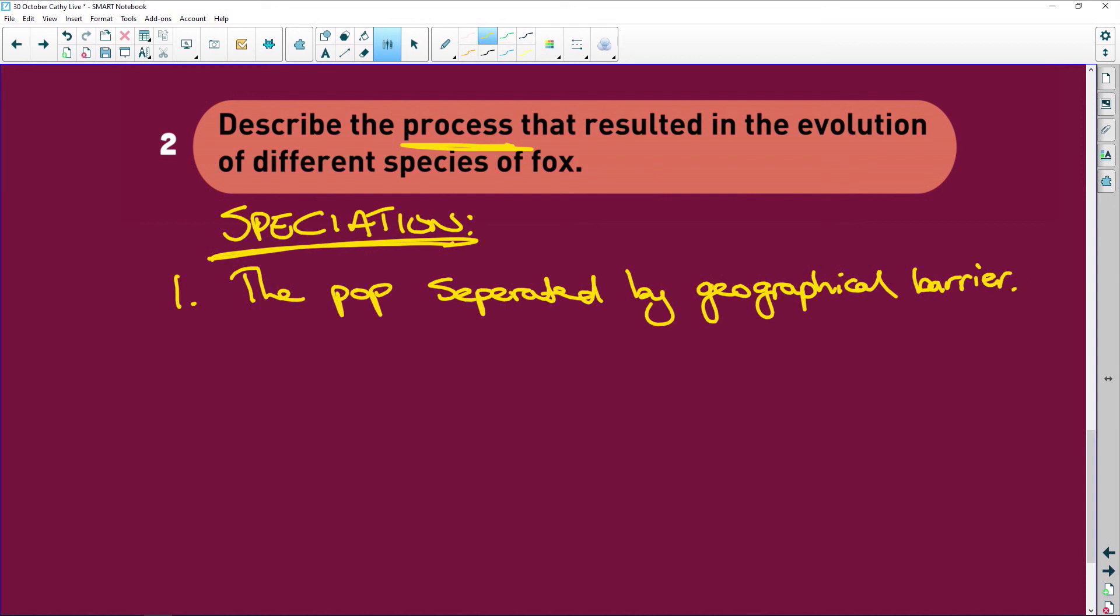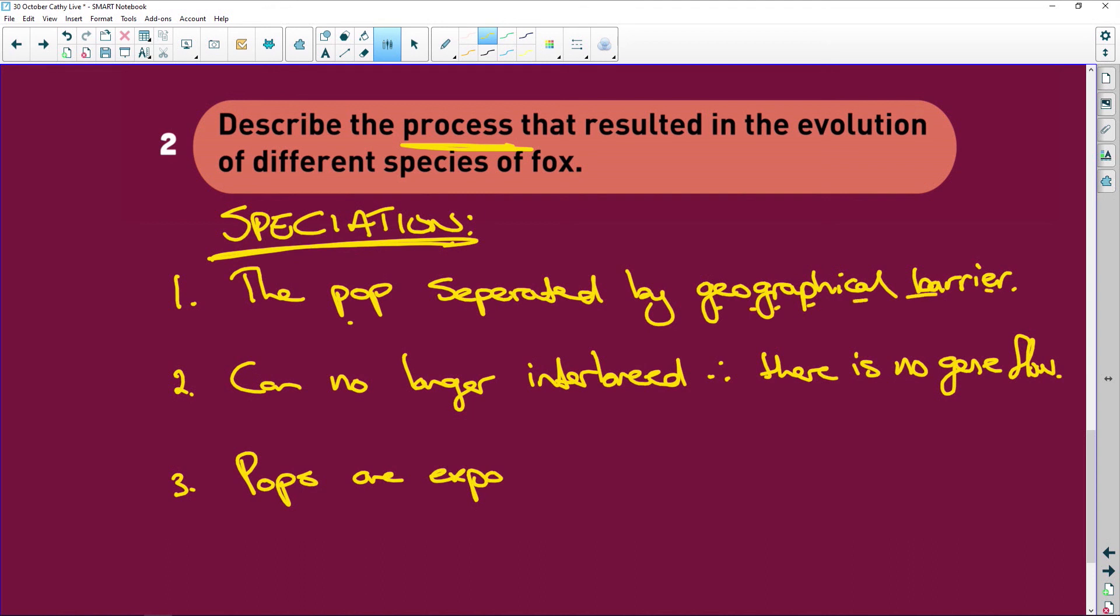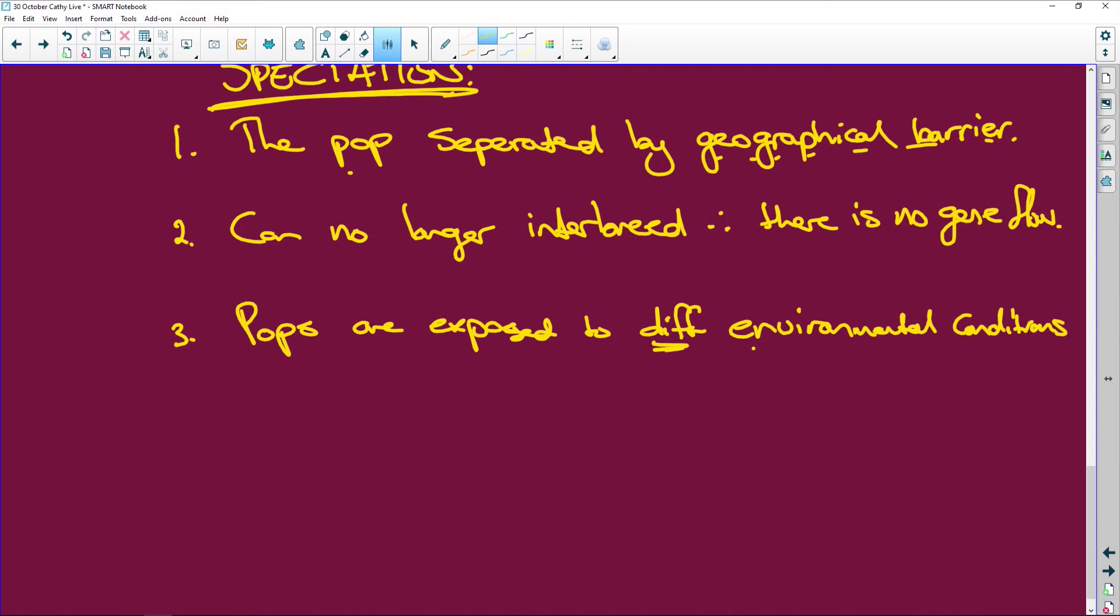Number two: can no longer interbreed, therefore there is no gene flow. So the genes are no longer mixing between the populations. Number three: pops are exposed, so remember they're on the different sides of the geographical barrier, exposed to different environmental conditions.